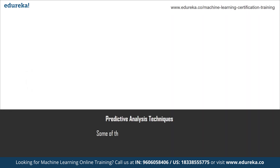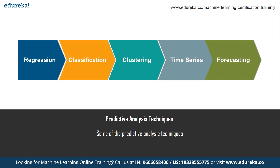First of all, we have regression. The main goal of regression is the construction of an efficient model to predict the dependent attributes from a set of attribute variables. A regression problem is when the output variable is either real or a continuous variable — such as weight, area, or salary. We can also define regression as a statistical means used in applications like housing and investing to predict the relationship between a dependent variable and a set of independent variables. Simple linear regression is a technique where the independent variable has a linear relationship with the dependent variable, used to predict outcomes — including binary variables with only two outcomes — where the dependent variable is categorical in nature.